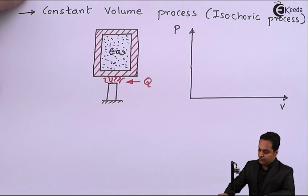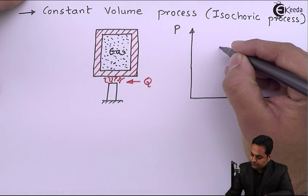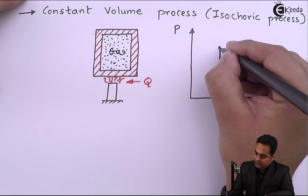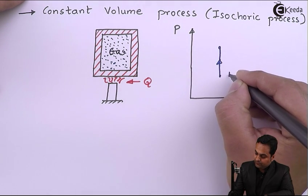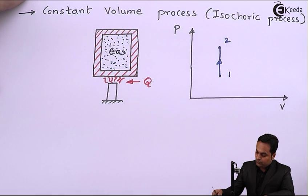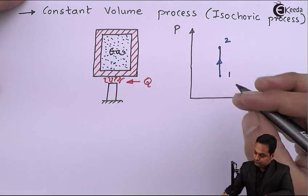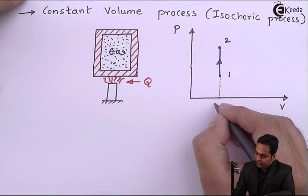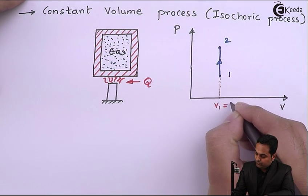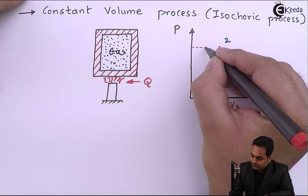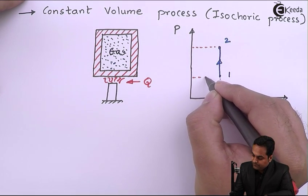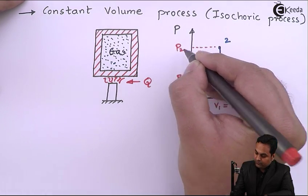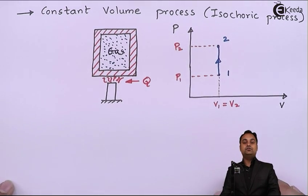Now this is the pressure-volume diagram for the process. The process is from state 1 to state 2. Here V1 is equal to V2 — the volume remains constant. Pressure rises from P1 to P2. So this is called heating at constant volume.